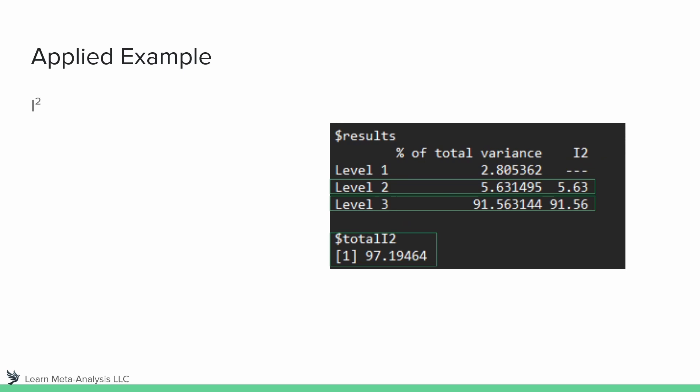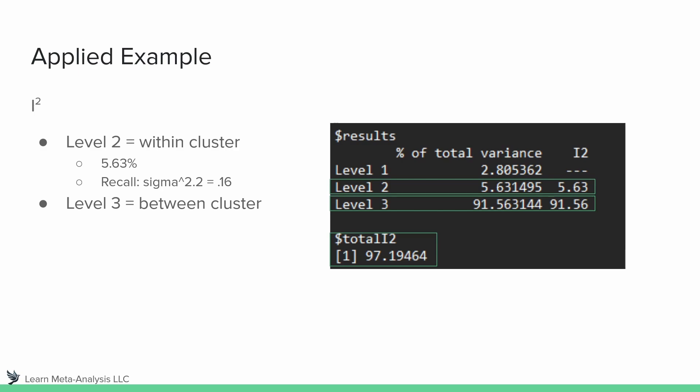Looking at our I-squared results: level 2 is within our clusters, and since tau-squared was smaller there, only 5.63% of the variance is explained by that level of the model. At level 3 — between our studies — sigma 2.1 was larger at 2.68, and I-squared here is 91.56%. These two statistics essentially agree: a bigger tau-squared is associated with a bigger I-squared percentage at that level of the model.